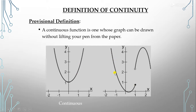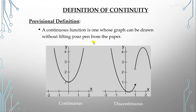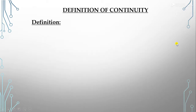Now look at this other graph — it goes from here to here, then there is a break, and then continues. The complete graph has a gap, so this is a discontinuous graph. In simple terms, a continuous function is one whose graph can be drawn without lifting the pen from the paper.